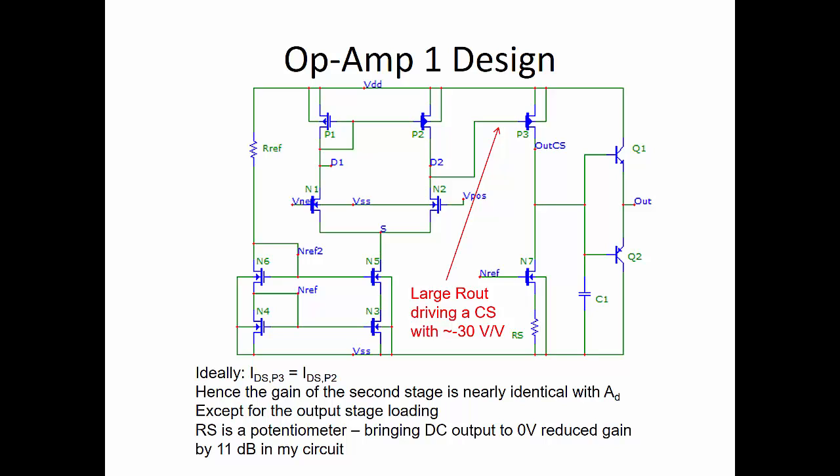And you're driving a common source amplifier that has a gain of roughly 30 volts per volt. So the Miller effect is going to be significant, and if we total up all of the capacitances from P2, N2, and P3, the capacitance at that node is going to be on the order of 3 or 4 picofarads. So the frequency response of this amplifier will be limited by that node, D2.